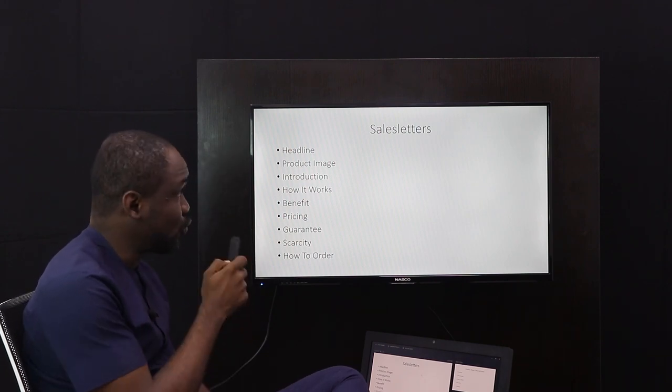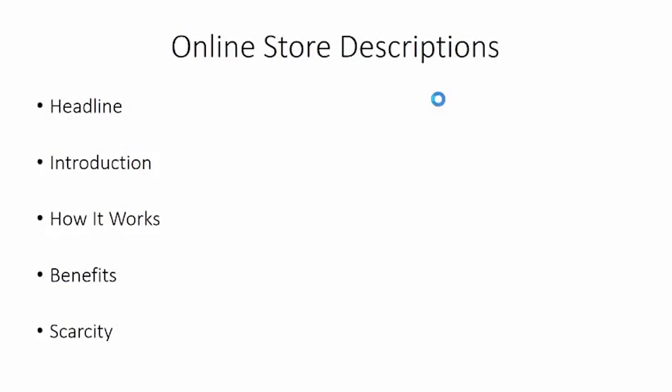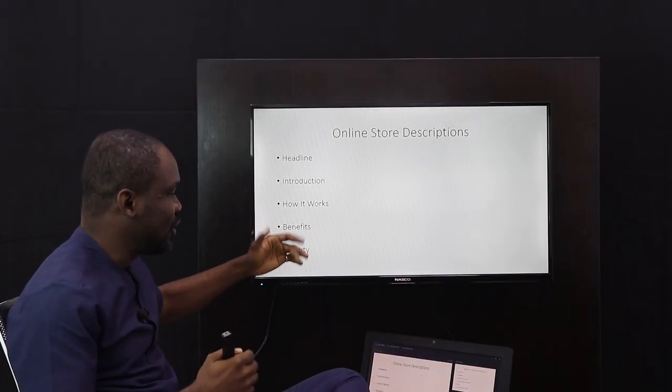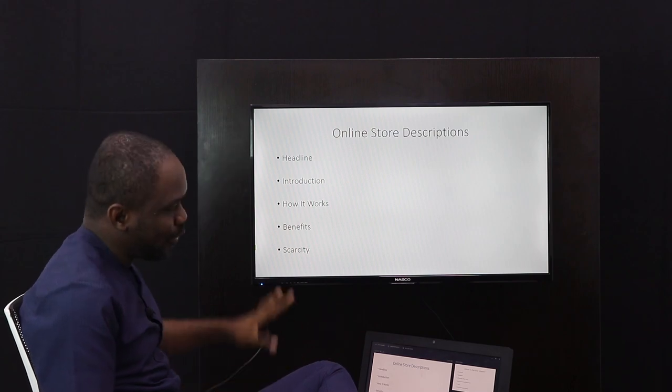This brings us to online store descriptions. If you are selling on Konga or Jumia, you still need an online store description — but you want to do it right, in a way that actually works. You start again with the headline, then the introduction, then explain how it works, put the benefits, and then add scarcity. The difference is you don't have a lot of space to write, so you have to be concise.